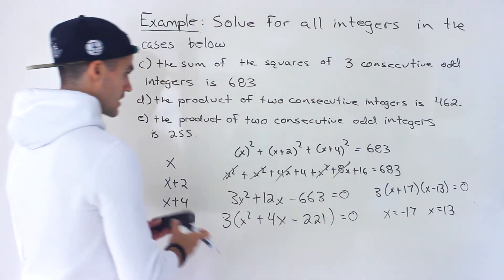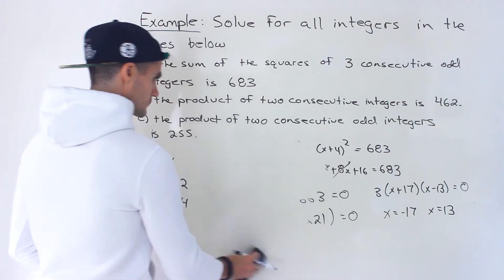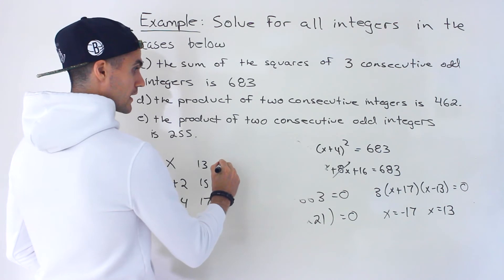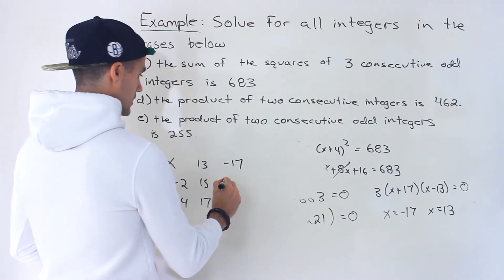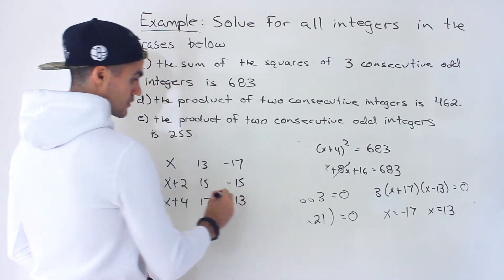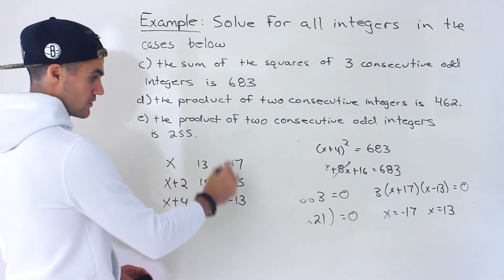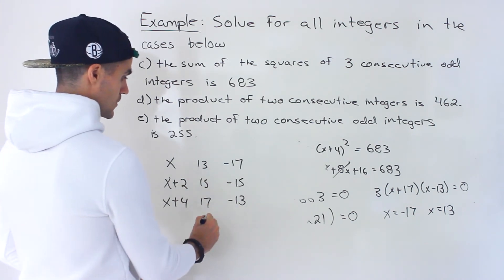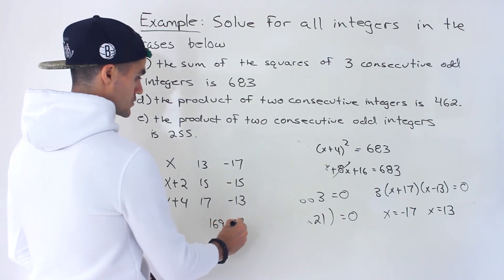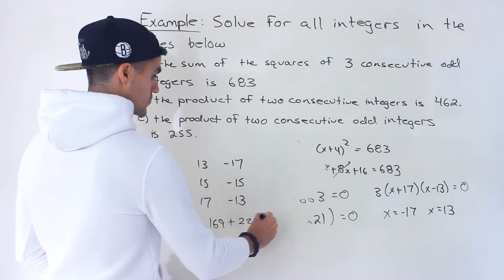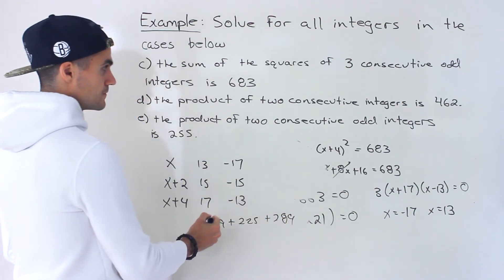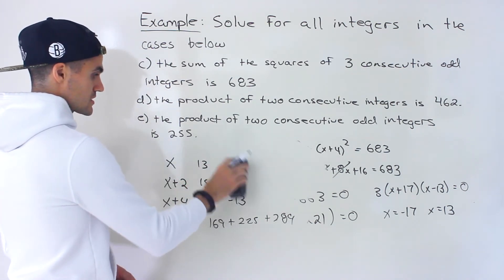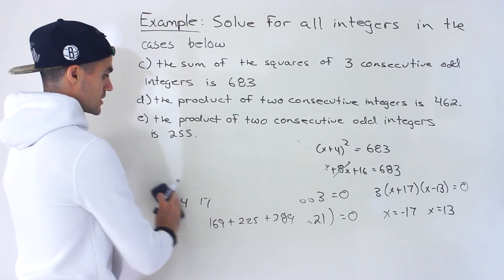Again two sets of solutions: we could have 13, 15, 17 or negative 17, negative 15, negative 13. When we square these, they're always positive. Let's verify: 13 squared is 169, 15 squared is 225, 17 squared is 289, and adding these gives 683 — correct. So those are the two sets of solutions for part c.